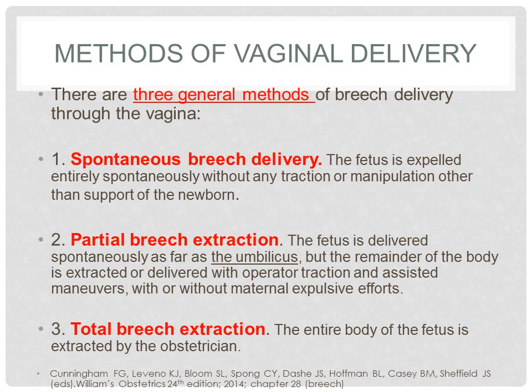There are three general methods of breech delivery through the vagina. First is a spontaneous breech delivery, where the fetus is expelled entirely spontaneously without any traction or manipulation other than support of the newborn. Partial breech extraction is when the fetus is delivered spontaneously as far as the umbilicus, but the remainder of the body is extracted with operator traction and assisted maneuvers, with or without maternal expulsive efforts. And total breech extraction is when the entire body of the fetus is extracted by the obstetrician.